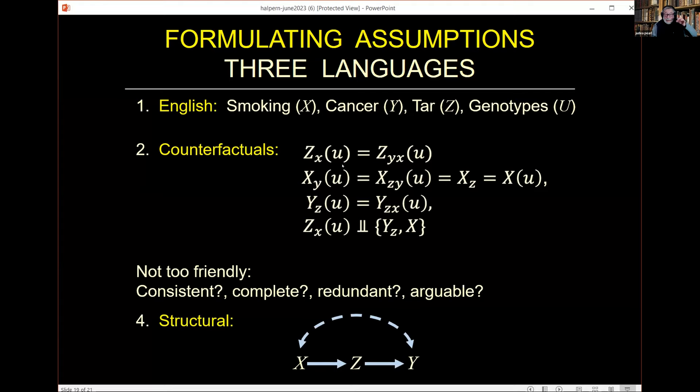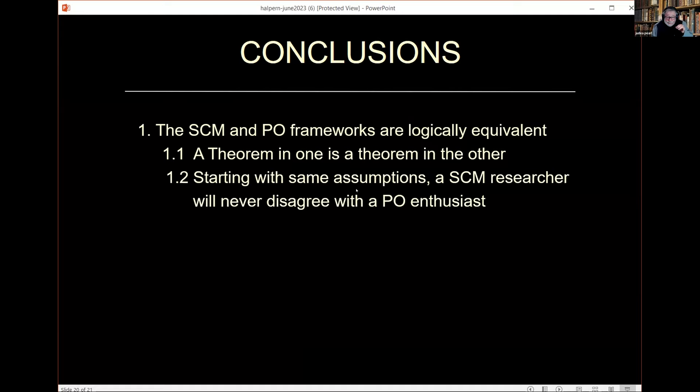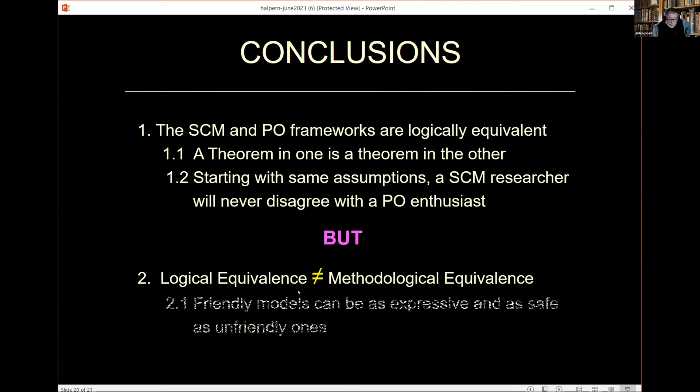The impact and significance of Halpern's axiomization is the following: that the two are equivalent. The SEM and the PO framework are logically equivalent in the sense that a theorem in one is a theorem in the other, which also means that starting with the same assumption, an SEM researcher will never disagree with the potential outcome enthusiast. But, and that's important, logical equivalence does not imply methodological equivalence, which to us means that friendly models can be as expressive and as safe as unfriendly ones. By safe I mean that they do not generate any idiosyncratic properties that the unfriendly models have excluded.